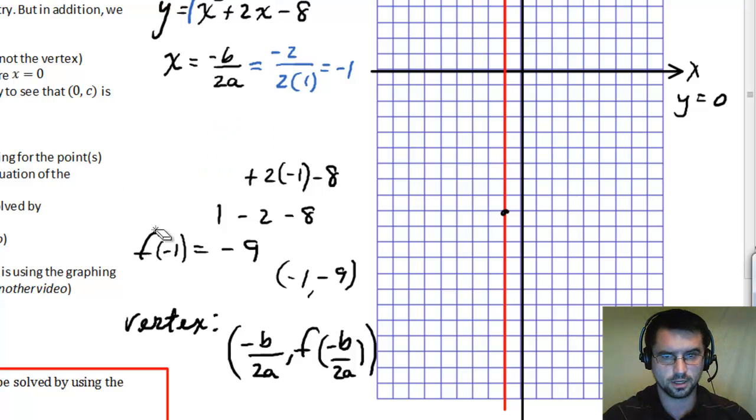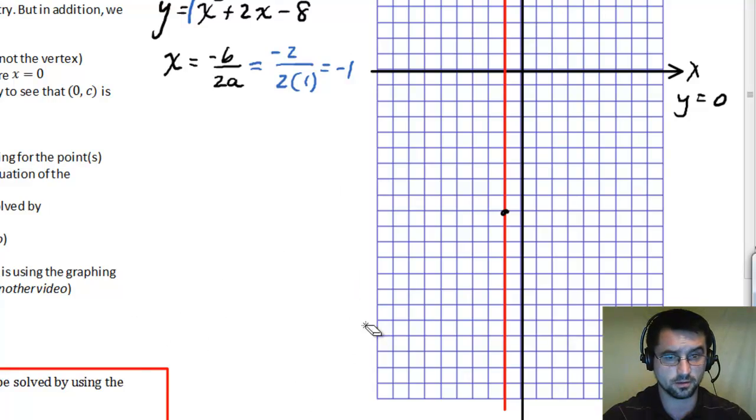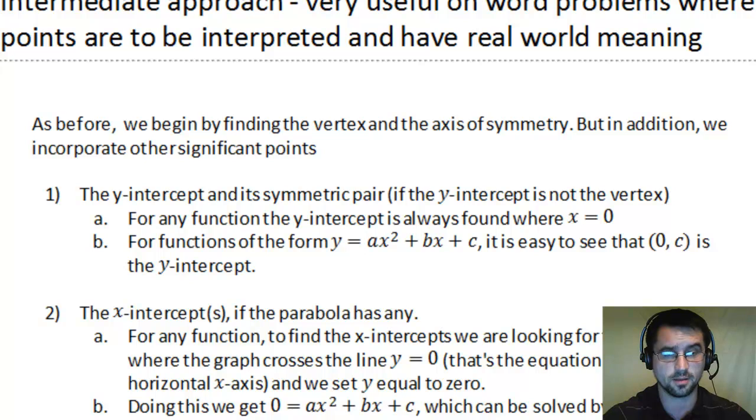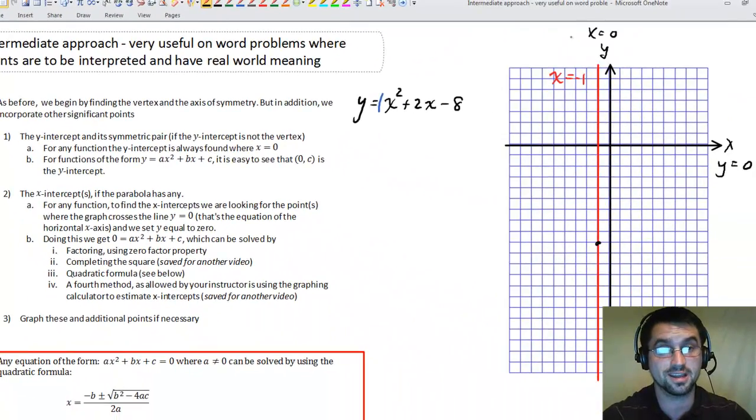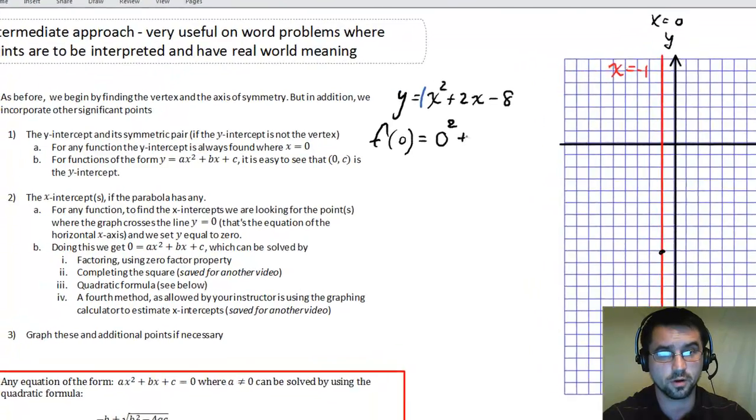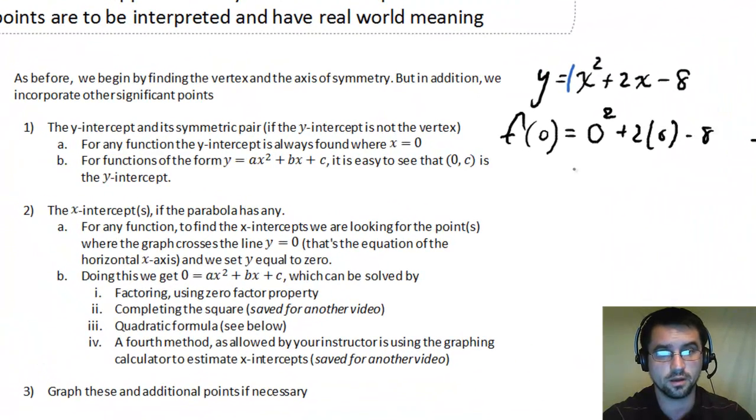When we're doing word problems, like I said, they often ask for the x and y intercepts. So I'm going to go to the y intercept next. So how do you find a y intercept? Well, you should know that from graphing linear equations. That to find a y intercept, you set x equal to 0. And you do that because the equation of the y axis is x equals 0. So basically you're finding f of 0. You're setting x equal to 0. You get 0 squared plus 2 times 0.